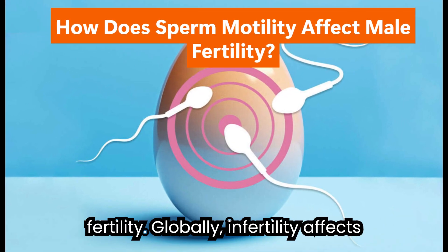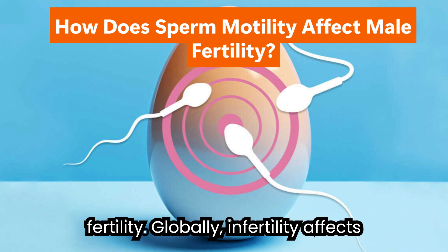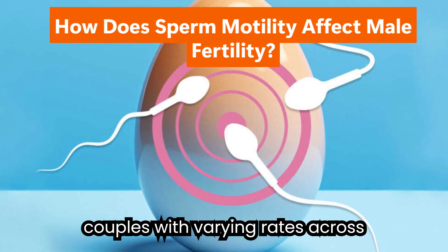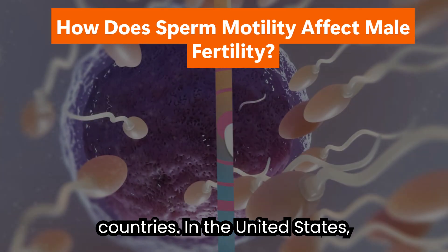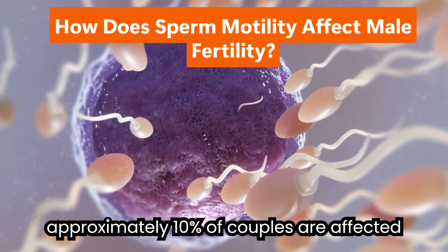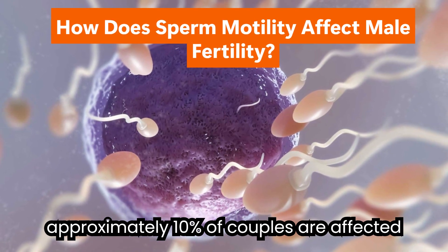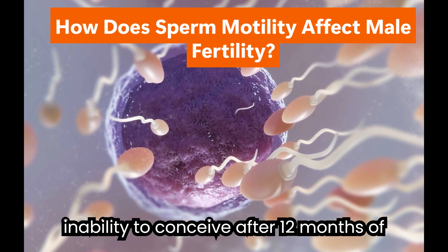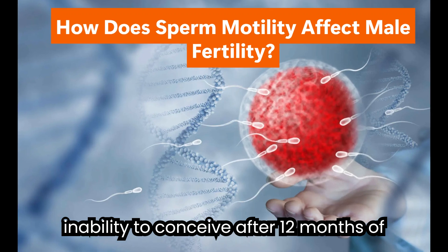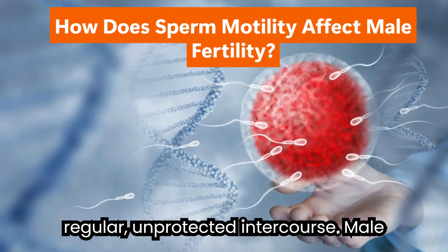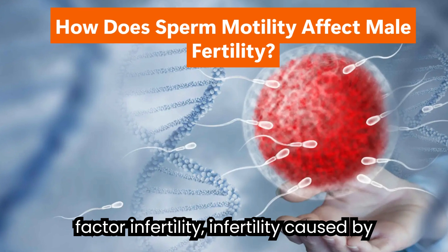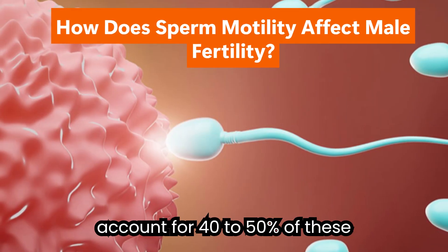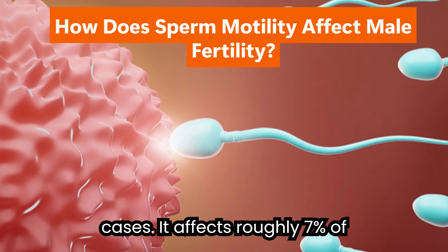The impact on male fertility: globally, infertility affects an estimated 60 to 80 million couples, with varying rates across countries. In the United States, approximately 10% of couples are affected by infertility, commonly defined as the inability to conceive after 12 months of regular, unprotected intercourse. Male factor infertility — infertility caused by biological issues in the male partner — accounts for 40 to 50% of these cases.